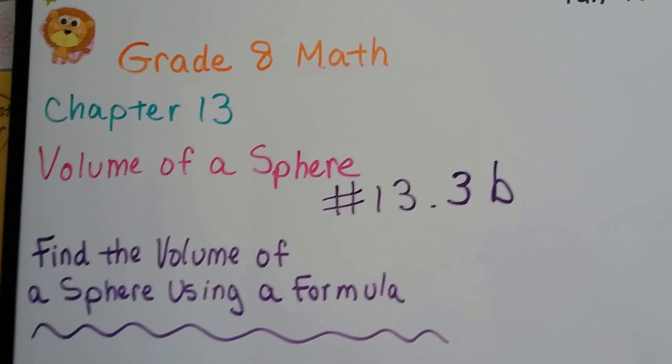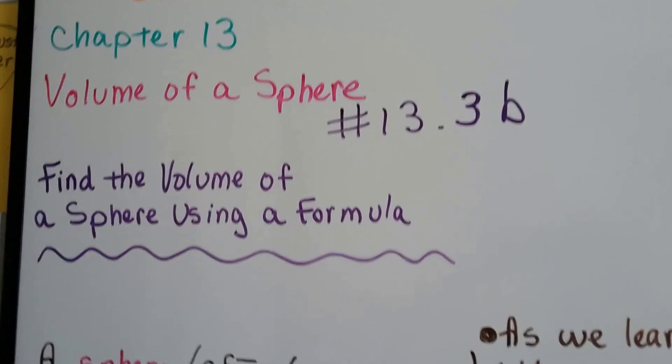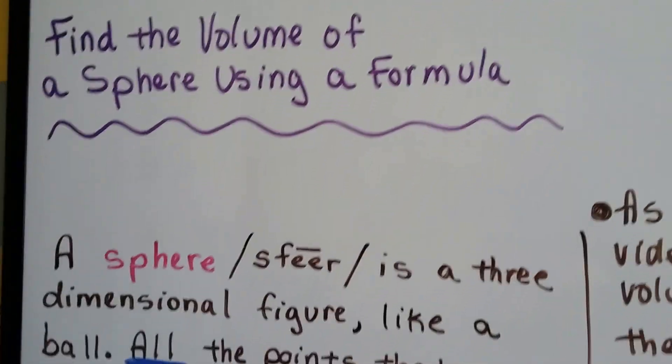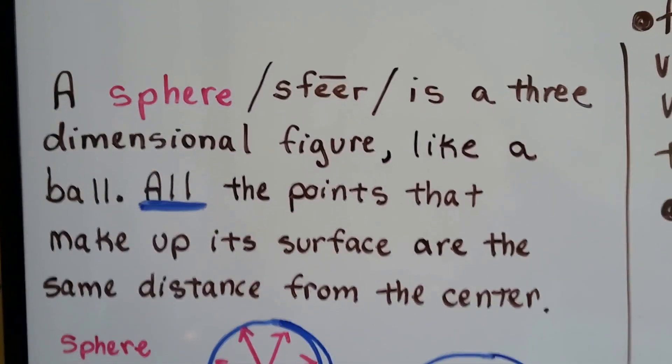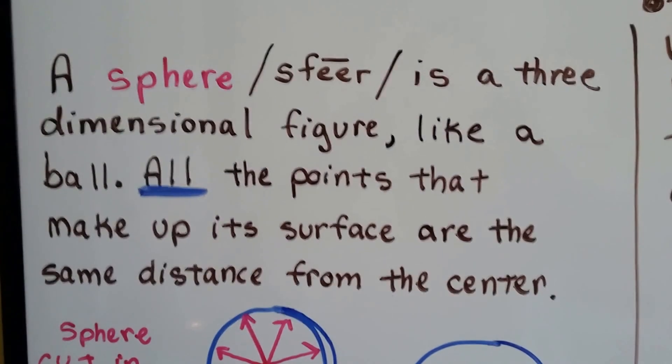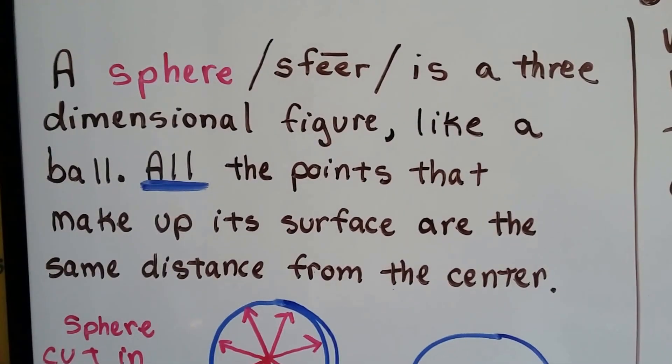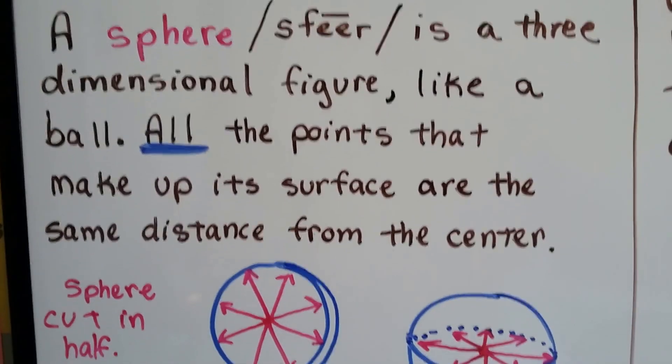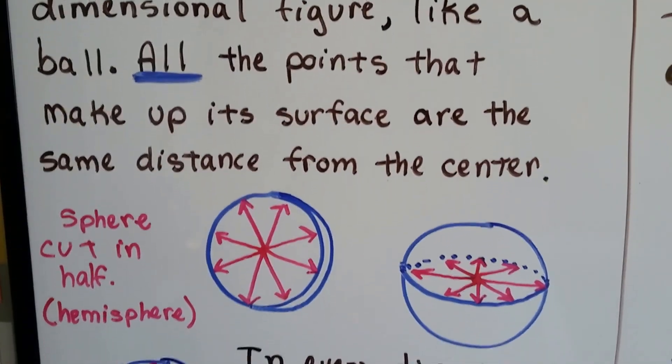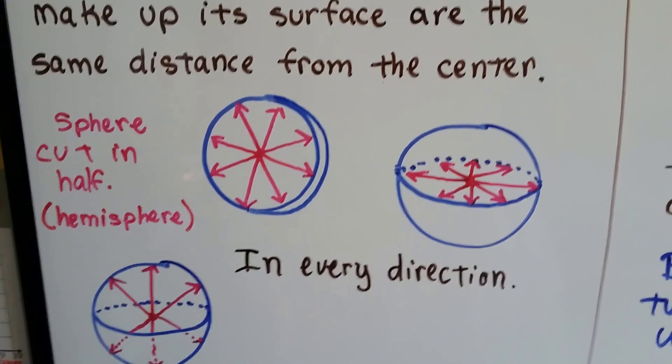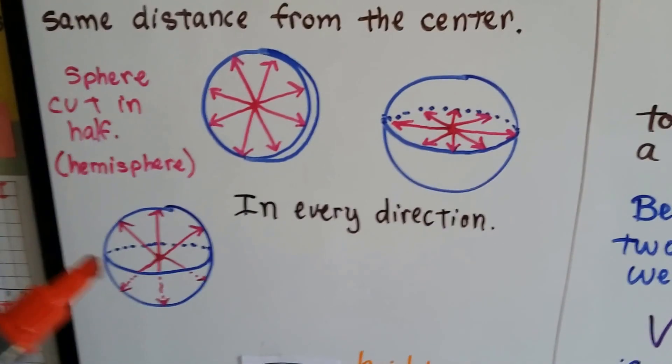Grade 8 math number 13.3b, volume of a sphere. We're going to find the volume of a sphere using a formula. A sphere, remember the pH says ph, like an F sound, sphere, is a three-dimensional figure like a ball. All the points that make up its surface are the same distance from the center. We covered this in the last video, but I'm going to go over it again.